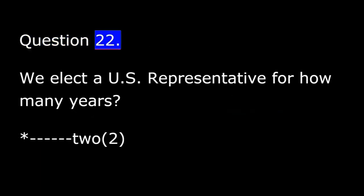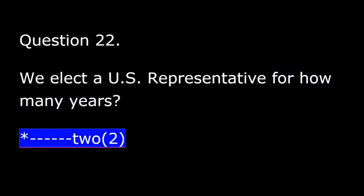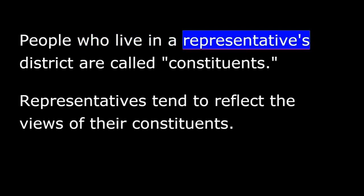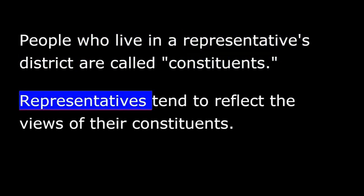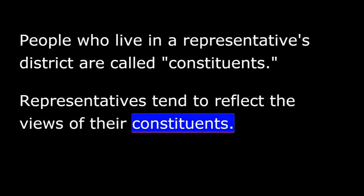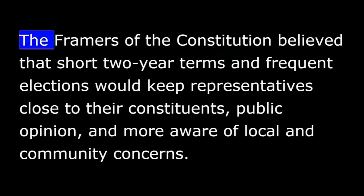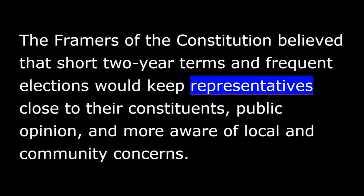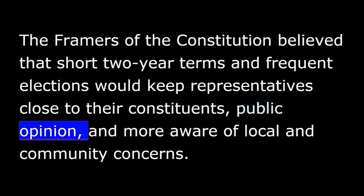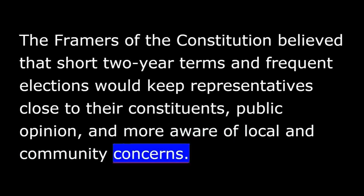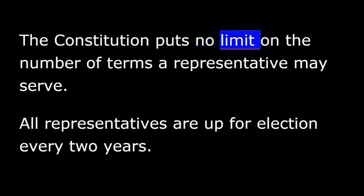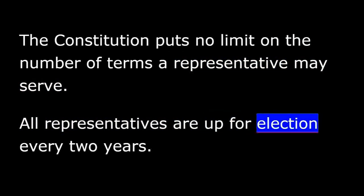Question 22. We elect a U.S. representative for how many years? 2. People who live in a representative's district are called constituents. Representatives tend to reflect the views of their constituents. If representatives do not do this, they may be voted out of office. The framers of the Constitution believed that short, two-year terms and frequent elections would keep representatives close to their constituents, public opinion, and more aware of local and community concerns. The Constitution puts no limit on the number of terms a representative may serve. All representatives are up for election every two years.